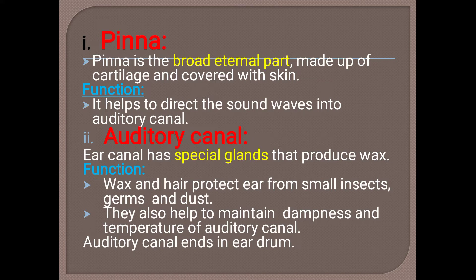The second part of the external ear is the auditory canal, also termed the ear canal. It has special glands that produce wax. The wax and hair produced in the auditory canal protect the ear from small insects, germs, and dust. They also help to maintain the dampness and temperature of the auditory canal. After the auditory canal comes the eardrum.